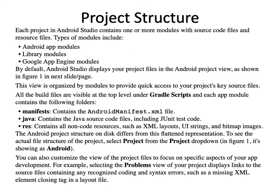Each application module contains the following main folders: the manifest folder, the java folder, and the res (resource) folder. The manifest folder contains the AndroidManifest.xml file. The java folder contains the Java source code files, including JUnit test code. The res (resource) folder contains all non-code resources such as XML layouts, UI strings, and bitmap images.